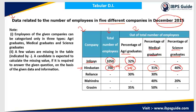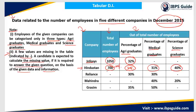The note states that employees of any given company can be categorized into only three types: agricultural graduate, medical graduate, and science graduate. There is no other classification. Additionally, a few values are missing in the table, indicated by dashes. A candidate is expected to calculate the missing value only if it is required to answer a given question, based on the provided data and information.